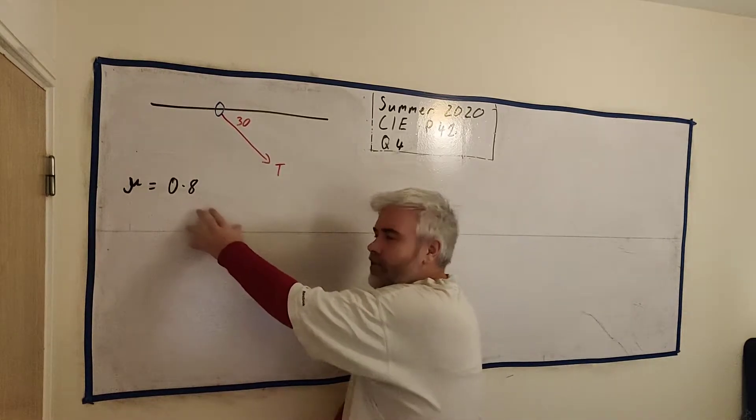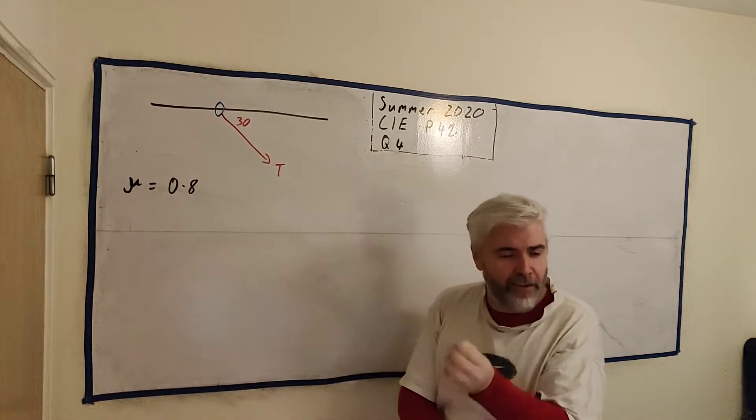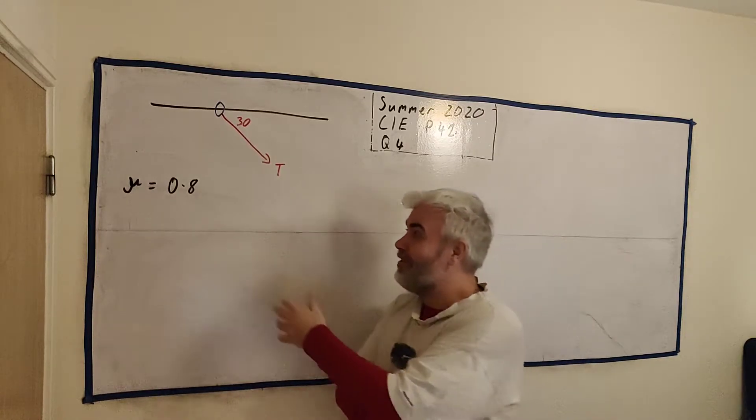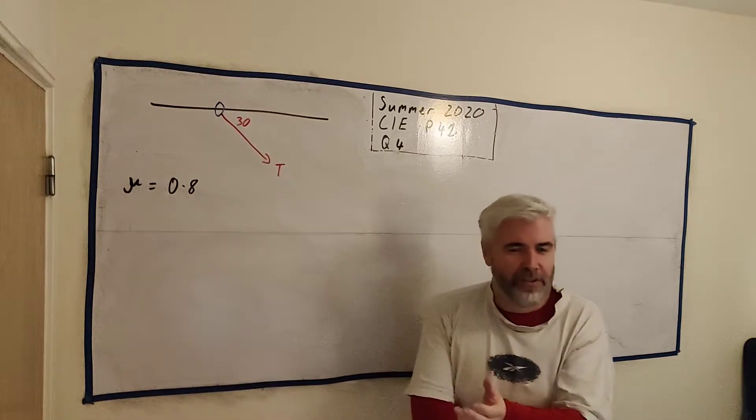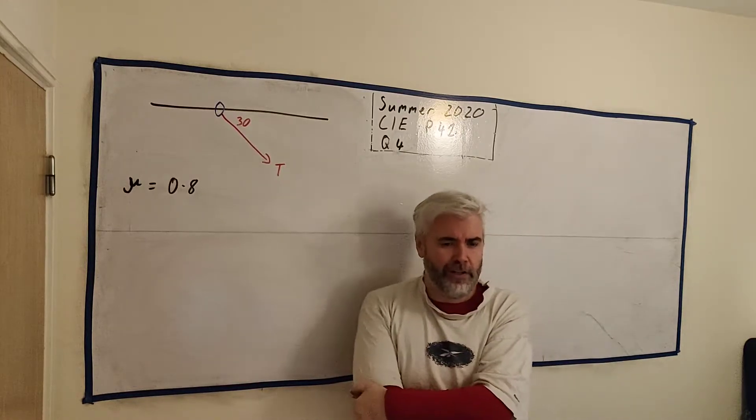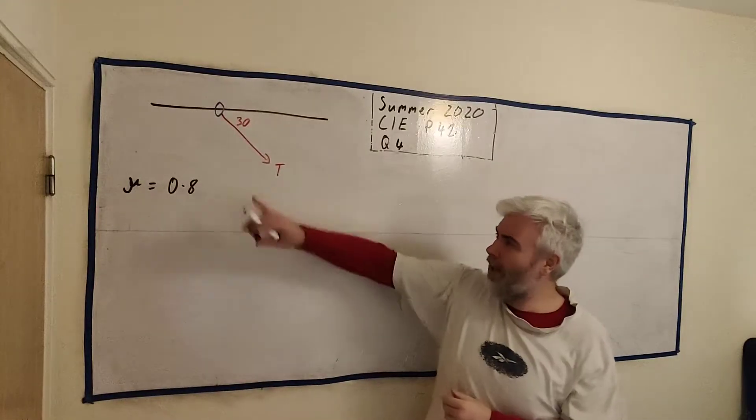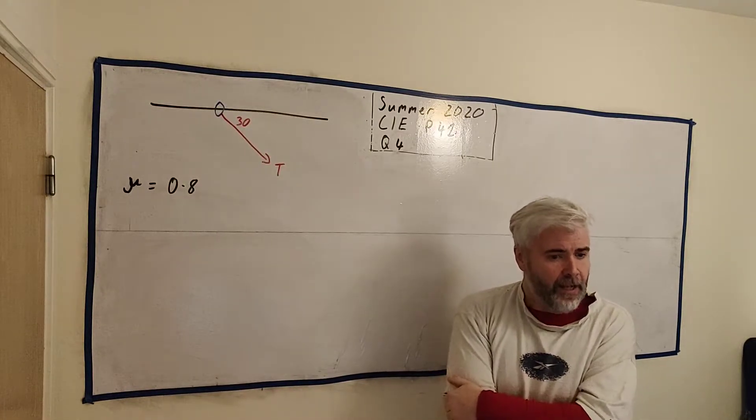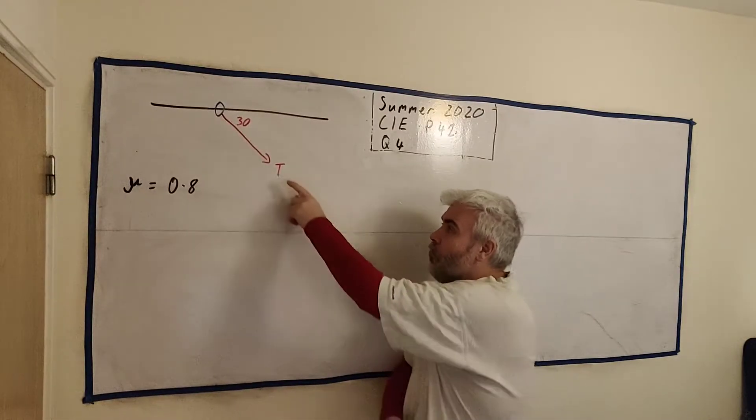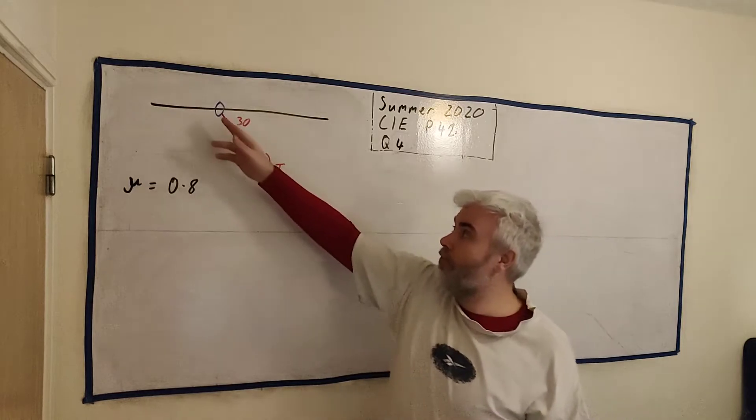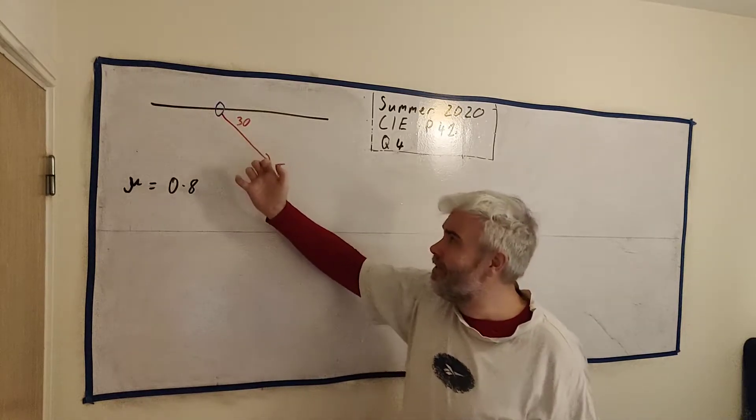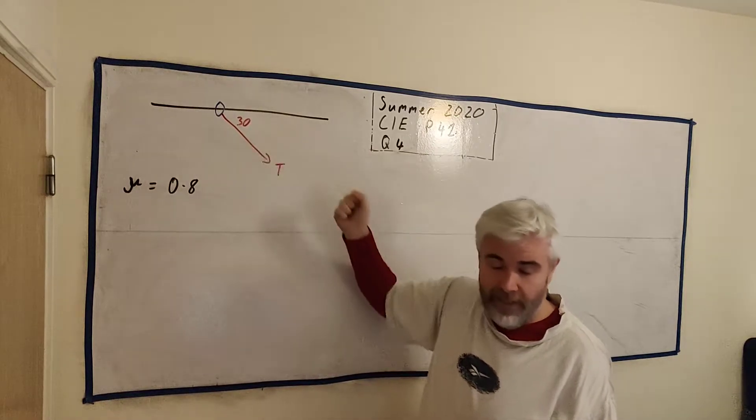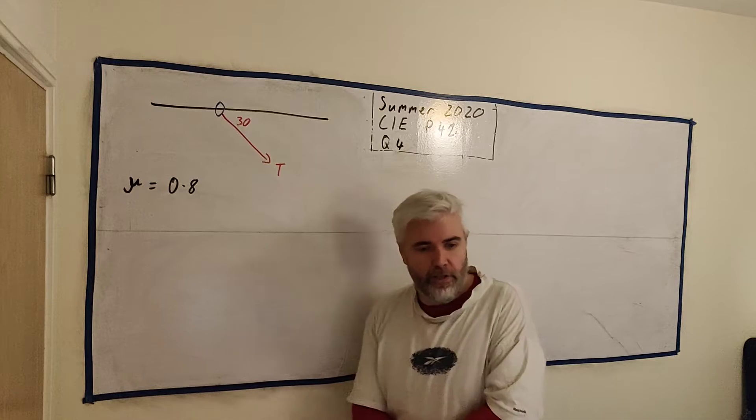Lots of students try this question and forget this. But you should notice that. They're never going to give you information at this level that you're not going to use. So if they've given you some information and you haven't used it, you've probably gone wrong somewhere. Maybe the odd question that's possible. So we have this force pulling down this direction, 30 degrees from the rod, and that's T.